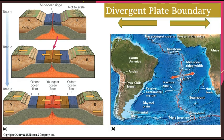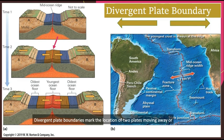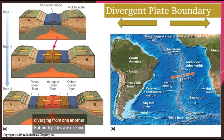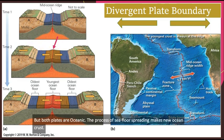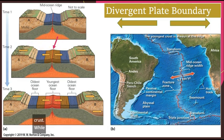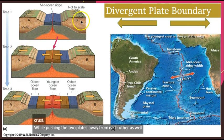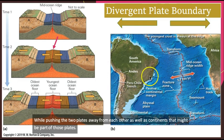Divergent plate boundaries mark the location of two plates moving away or diverging from one another. When both plates are oceanic, the process of seafloor spreading makes new ocean crust, while pushing the two plates away from each other, as well as continents that might be parts of those plates. South America and Africa, for example.